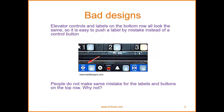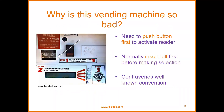So common sense can be used. Why is this vending machine so bad? First, you need to push a button to activate the reader; second, you normally insert the bill first before making a selection — contrary to a well-known convention. There are still many such vending machines seen today, like soft drink vending machines in malls or waiting areas. In the old design you had to push the button first, but now you insert the bill and then press the button to choose.